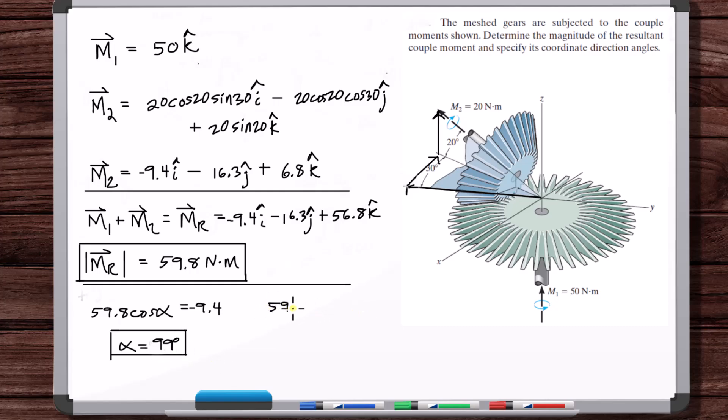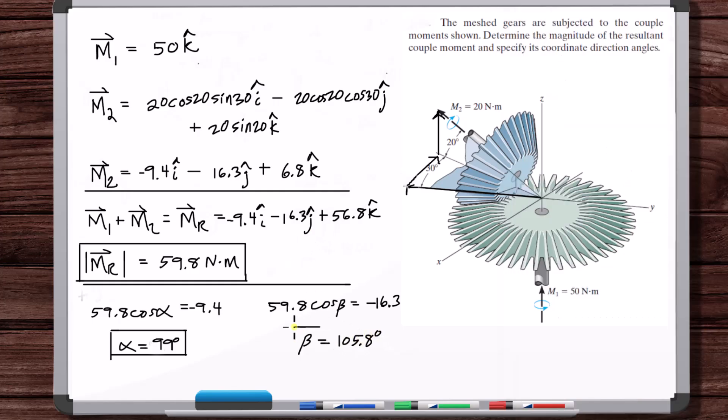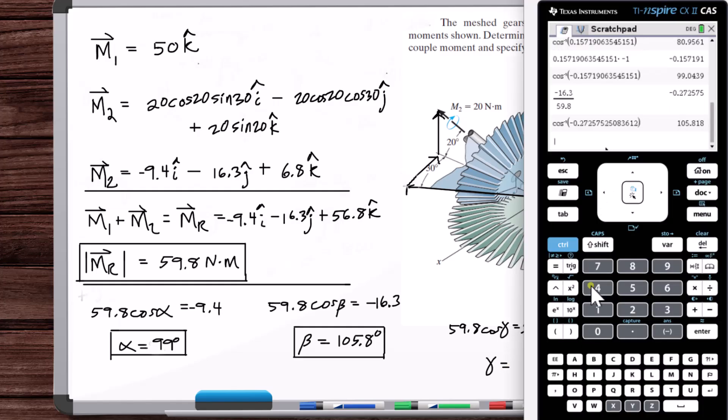Now 59.8 cosine beta is minus 16.3. So beta is 106 degrees. And 59.8 cosine of gamma is equal to 56.8. So gamma...